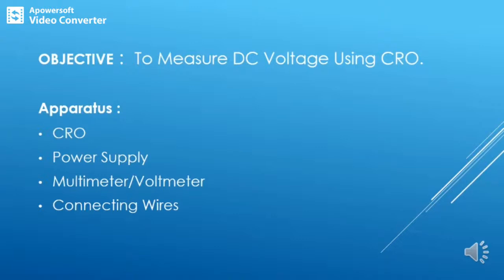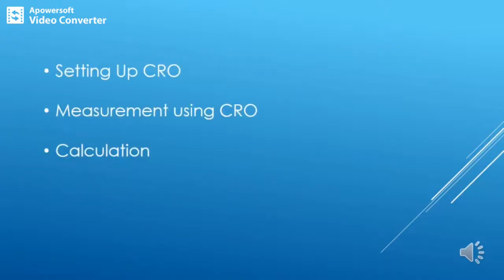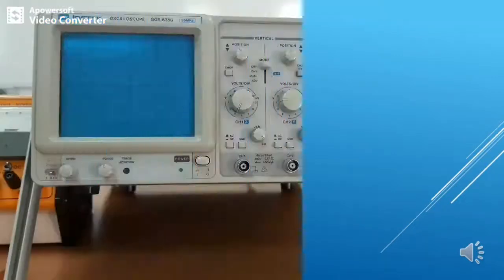The objective of this experiment is to measure DC voltage using CRO. For this we need a CRO, a DC power supply, a voltmeter or multimeter, and some wires. In this experiment we will learn three things: first, how to set up the CRO; then how to take readings; and after that, the calculation of DC voltage using a formula.